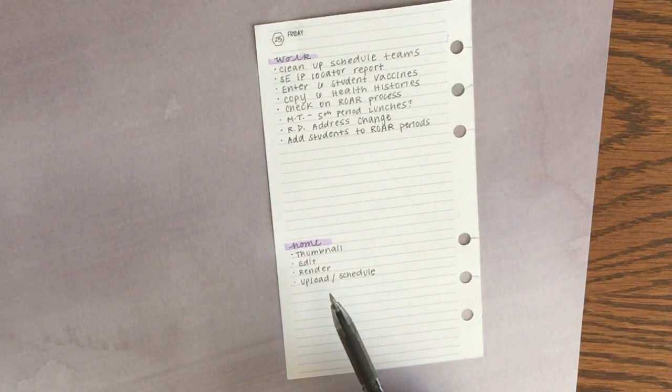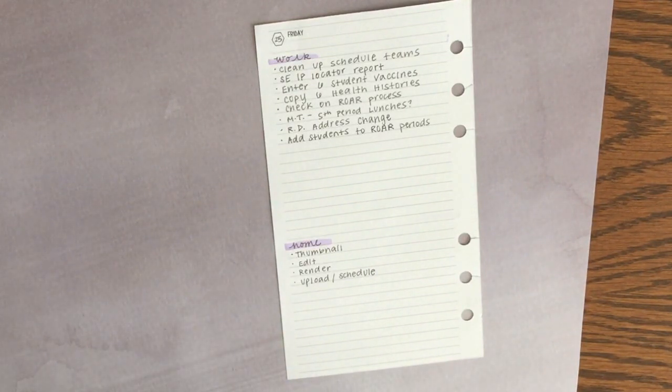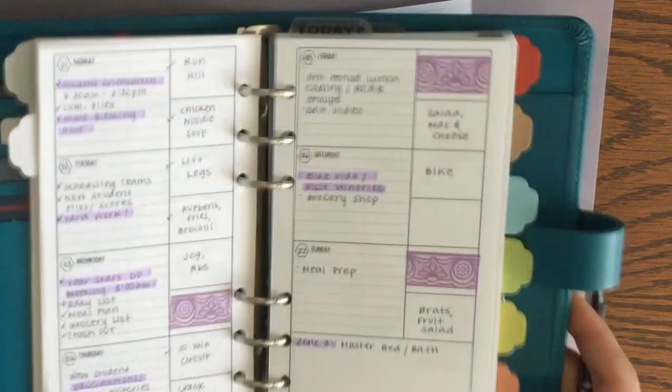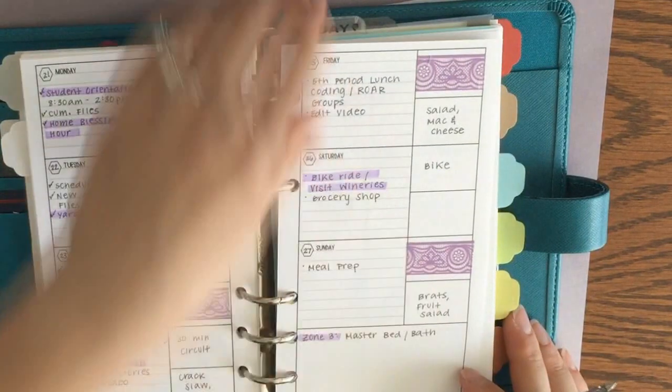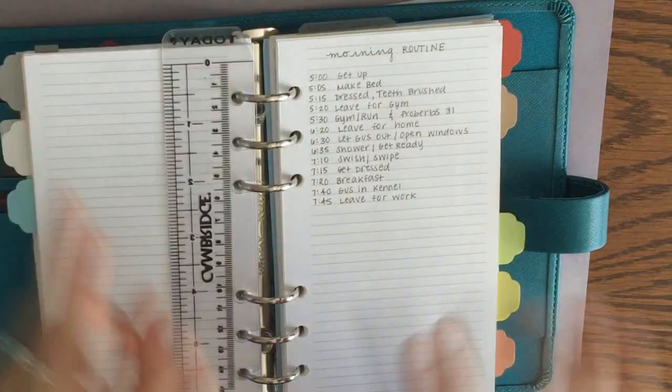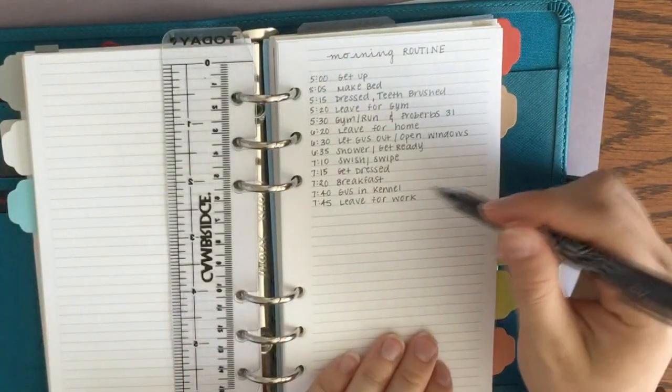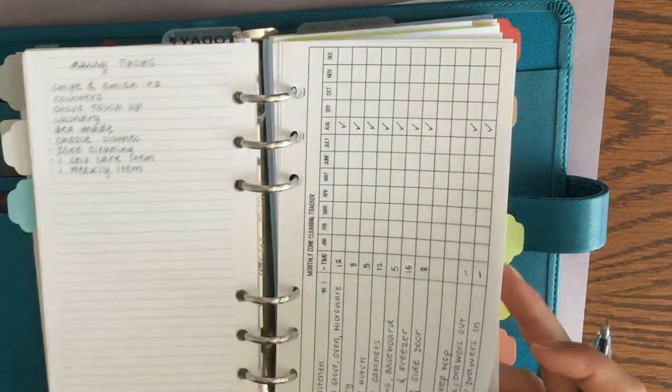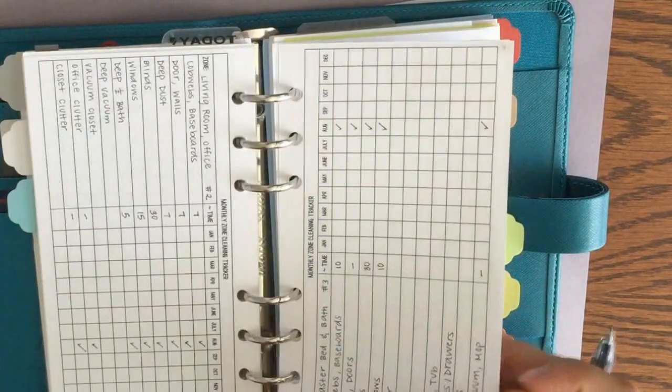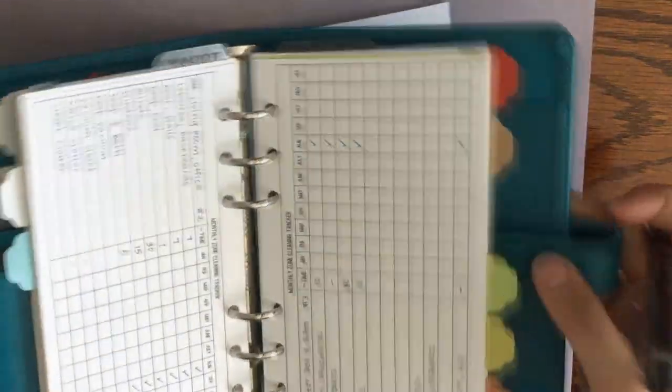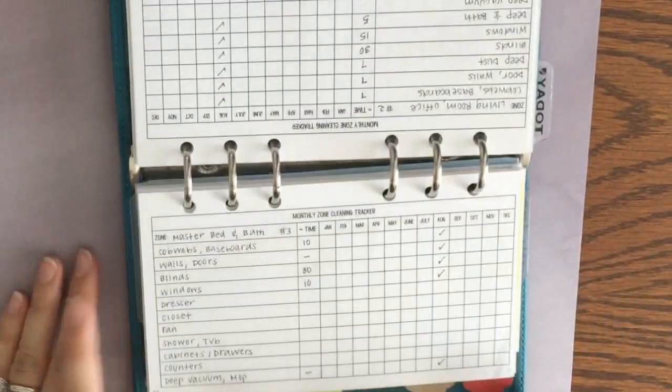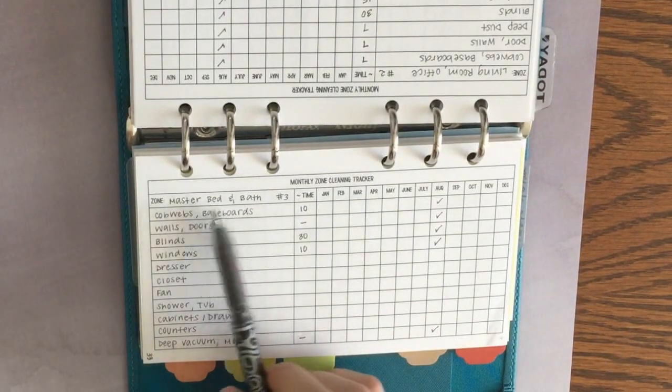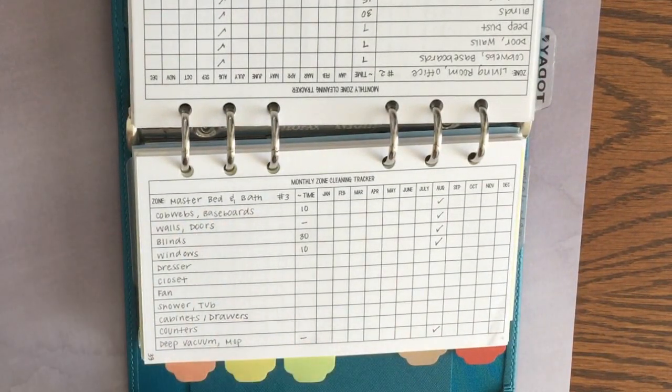The other thing that I do every day and that I add to my daily page every day is, since I'm doing Fly Lady zone cleaning, I go to my home tab and specifically into my control journal that I've set up for the Fly Lady system, and I go to my monthly zone cleaning checklist for this week. Here's my checklist for this week.